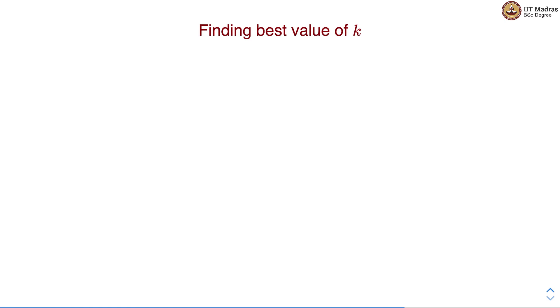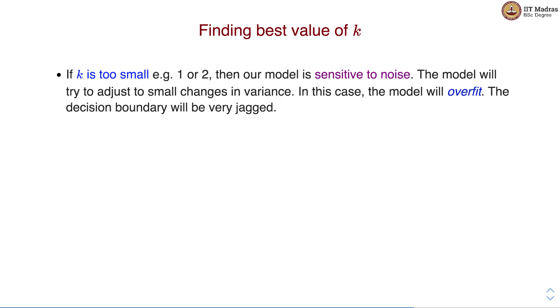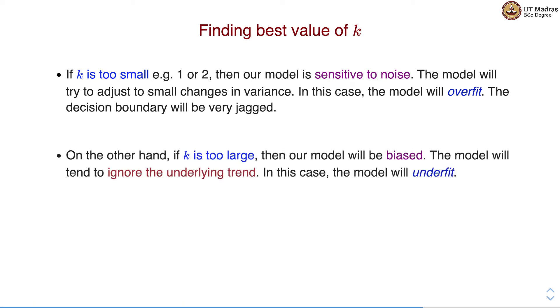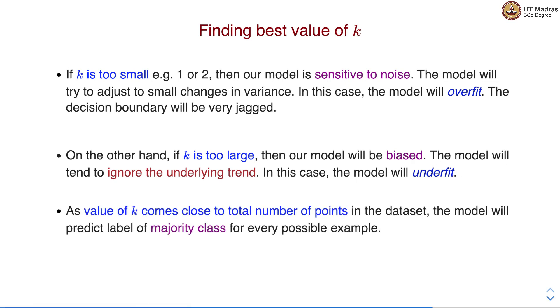One of the critical questions in KNN is how to find the best value of K. If K is too small then our model is sensitive to noise. The model will try to adjust to small changes in variance and in this case the model will overfit. The decision boundary will be very jagged. On the other hand if K is too large then our model will be biased. The model will tend to ignore the underlying trend in the neighborhood and in this case the model will underfit. As the value of K comes close to the total number of points in the data set, the model will predict the label of majority class in the data set.